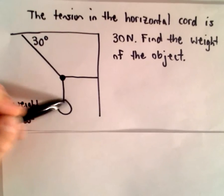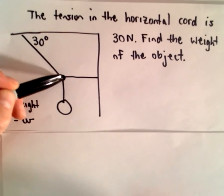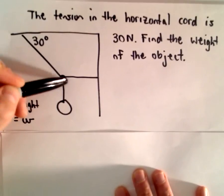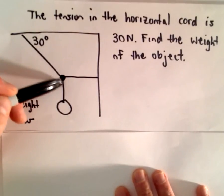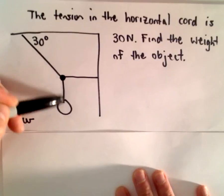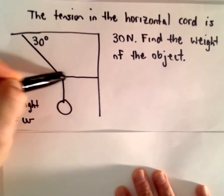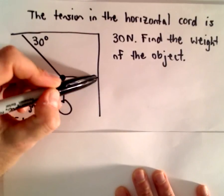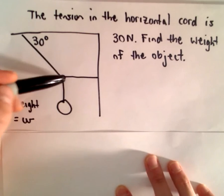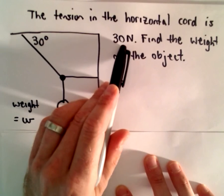So we've got some object hanging from a cord and there's a knot that connects these three cords in general. So we've got the weight of the object, we've got a cord that connects it horizontally to the wall. We're told that the tension in that horizontal cord is 30 newtons.